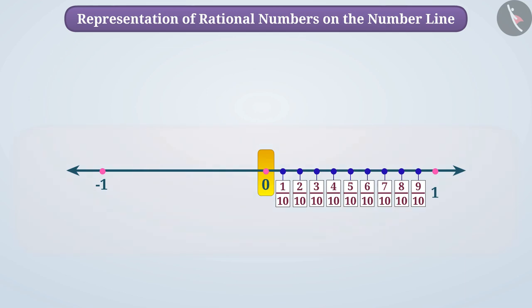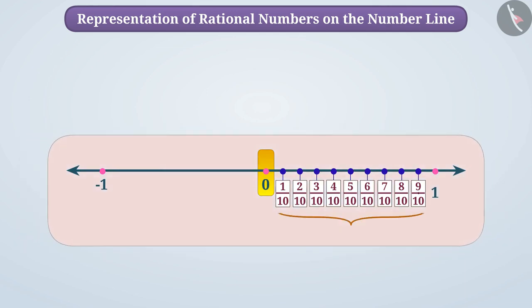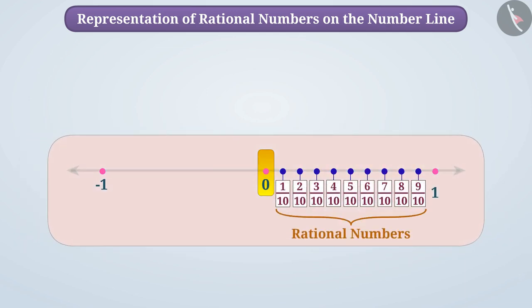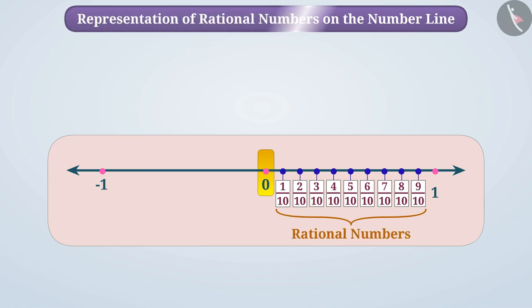Just now we have represented rational numbers on the number line. Let's understand in detail the representation of rational numbers on the number line.